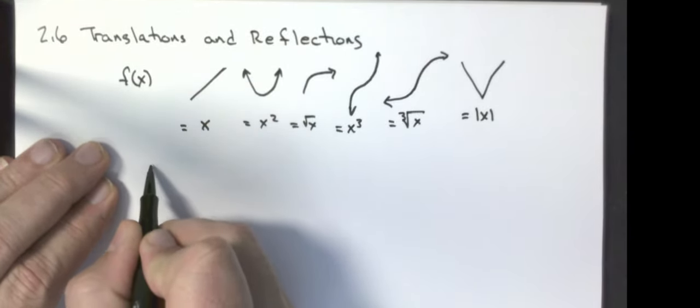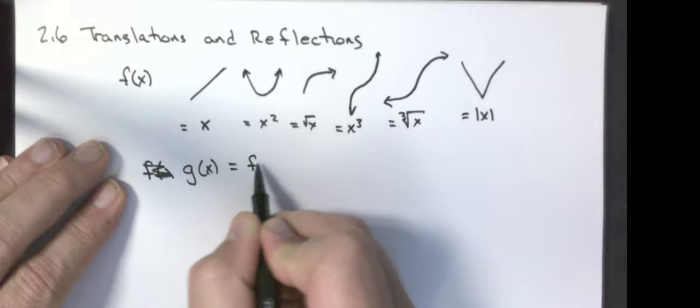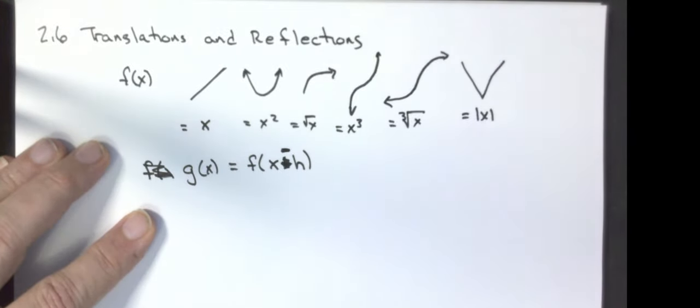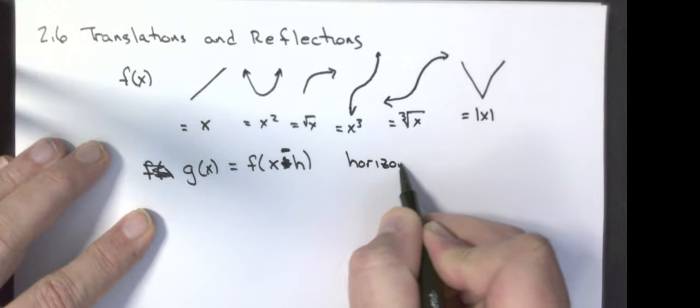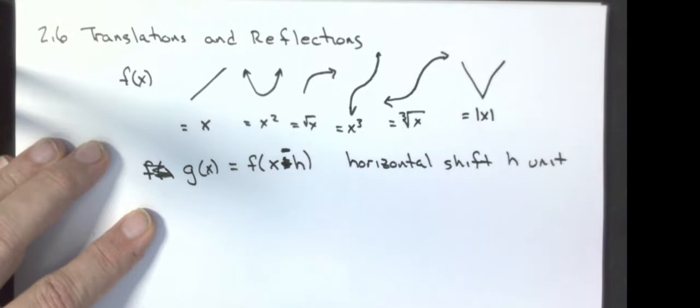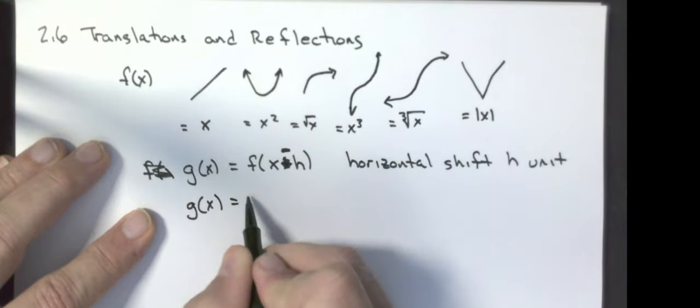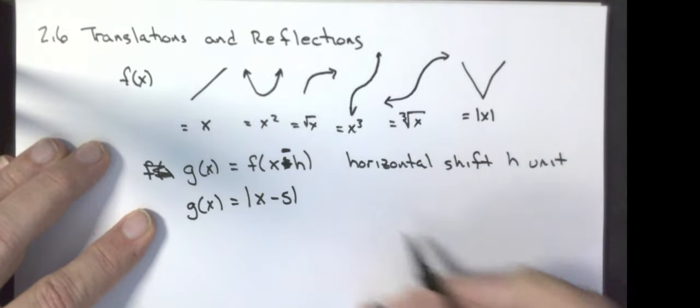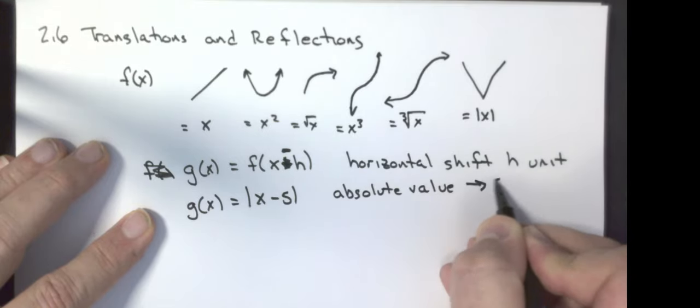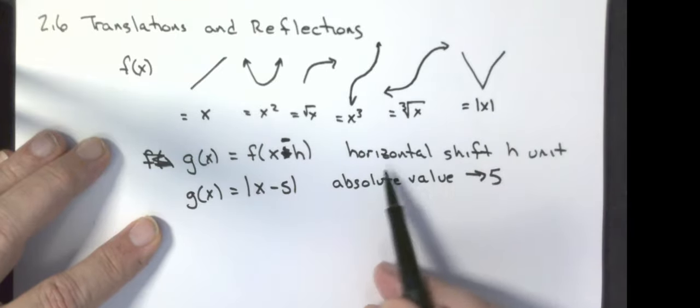If I do g of x equals f of x minus h, this is a horizontal shift h units. It's in the opposite direction. For example, if I had g of x equals the absolute value of x minus 5, this is my absolute value graph shifted to the right. That negative means the opposite.